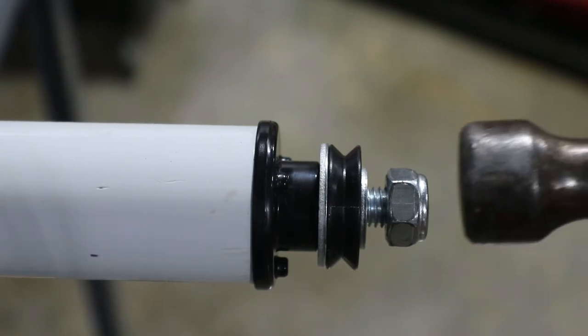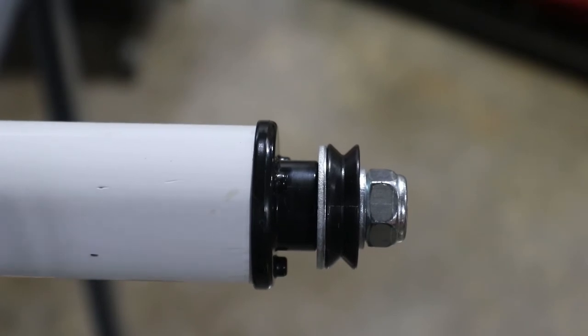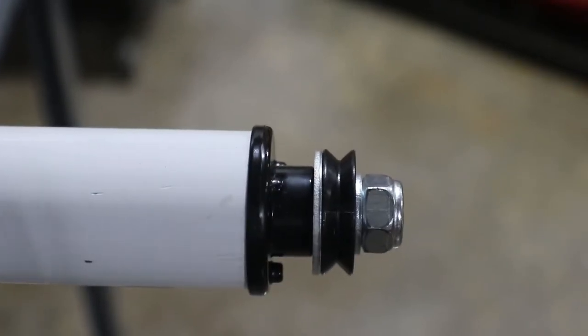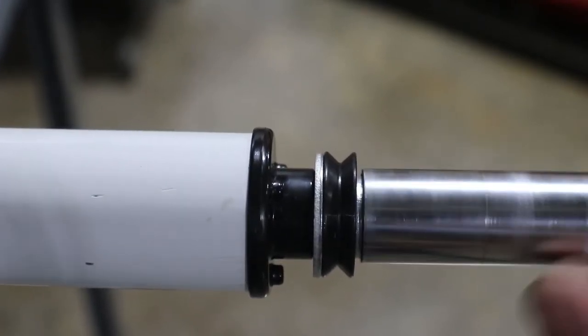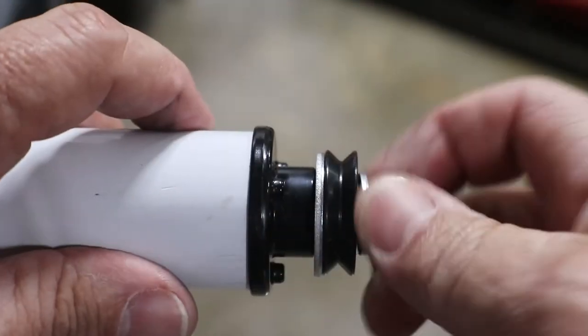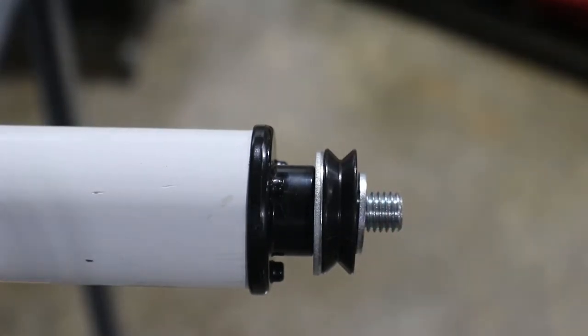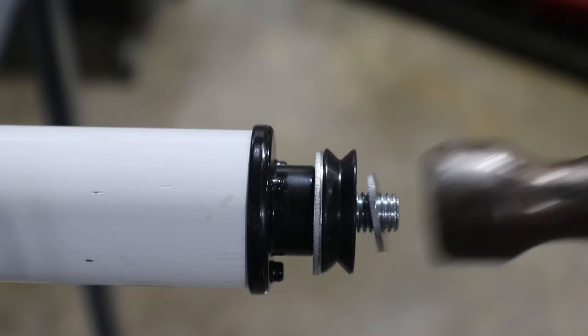Now, take a hammer and gently tap the bolt. You'll see it going inside. Now take your wrench again and take the nut completely off. And tap the bolt all the way in.